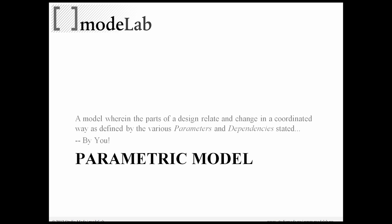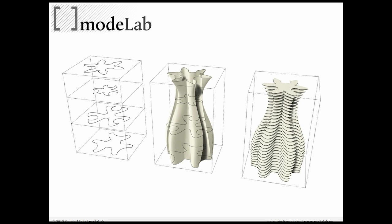Now a parametric model is really a model wherein the parts of a design relate and change in a coordinated way as defined by the various parameters and dependencies stated by you. This is the typical parametric model where you might see a couple shapes connected to form a loft and then sections to represent that parametric relationship in a slightly different way.